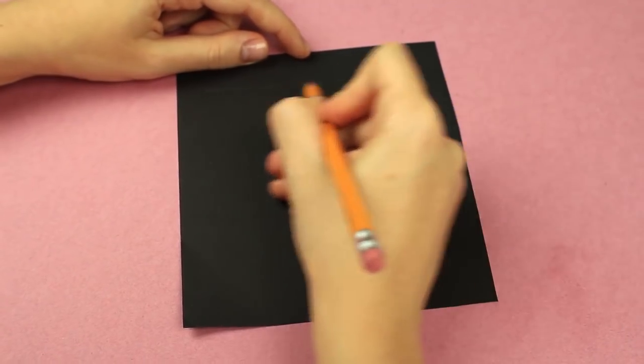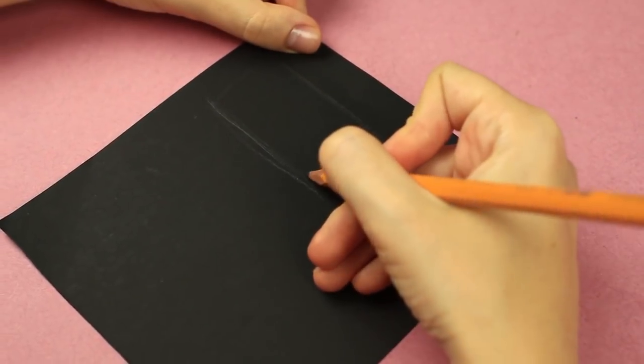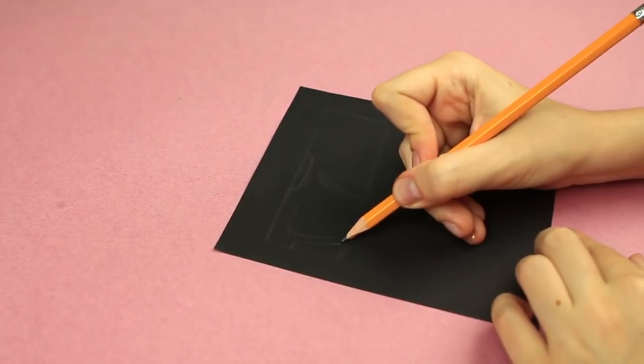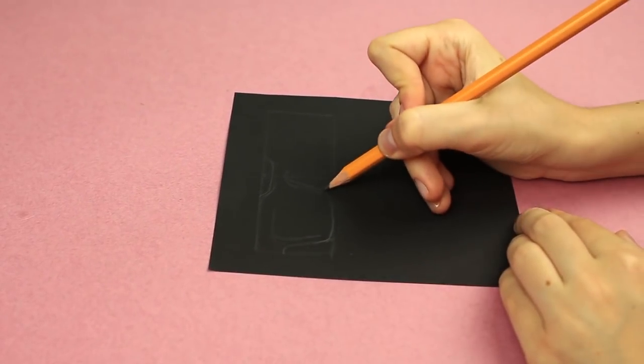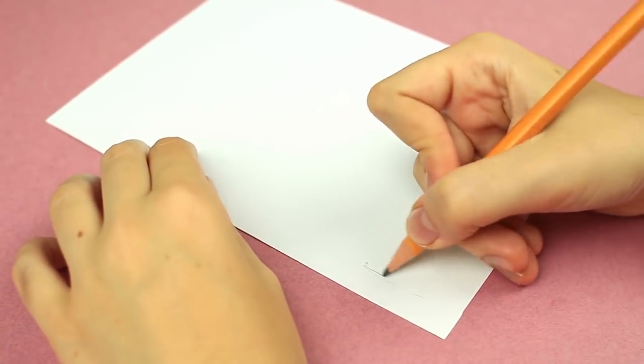Draw glasses on the black paper. It's easy! Sketch a square first. Divide it in half. Draw a bridge. Outline a frame. Cut it out. The lenses will be white.